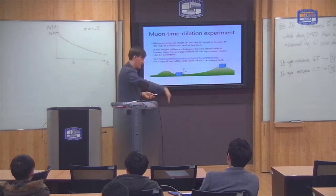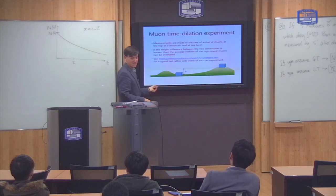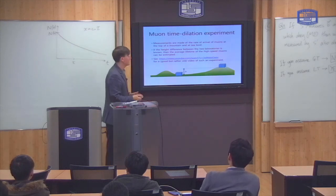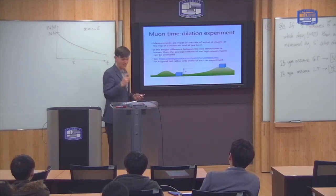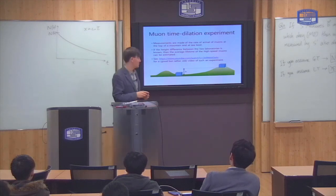Because they'd have more time to decay before they reach this laboratory here. Now, by measuring the difference in the number of muons per unit time at this laboratory and that laboratory, you can calculate the time dilation effect. Calculate the size of the time dilation.